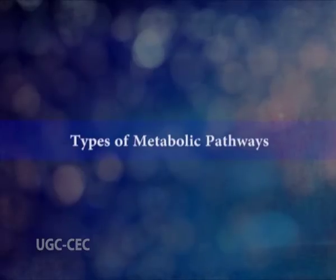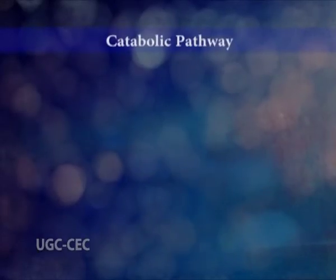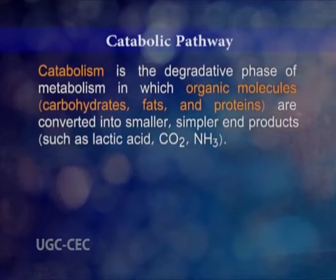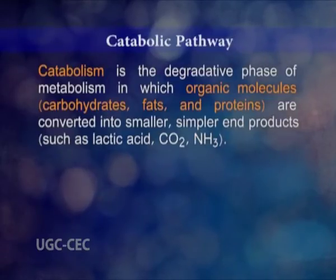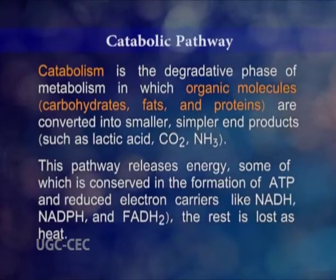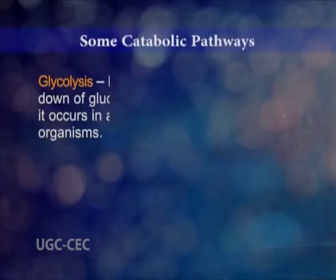Next, coming to the types of metabolic pathway in detail. First, catabolic pathway. Catabolism is the degradative phase of metabolism in which organic molecules such as carbohydrates, fats, and proteins are converted into smaller end products such as lactic acid, carbon dioxide, etc. This pathway releases energy, some of which is conserved in the formation of ATP and reduced electron carriers like NADH, NADPH, and FADH2, and the rest is lost as heat. Some major catabolic pathways in our cells are glycolysis — it is the breaking down of glucose, occurring in all living organisms.